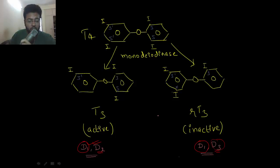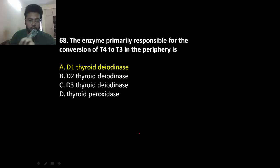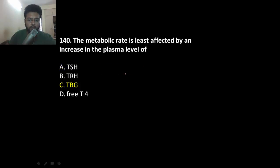If you are asked to choose which one is the main hormone to convert T4 into T3, go for D1. So D1 thyroid deiodinase is the answer. The metabolic rate is least affected by—TRH stimulates TSH, and that will increase the release of T4, but thyroid binding globulin does not affect the metabolic rate.